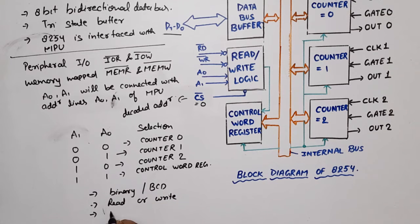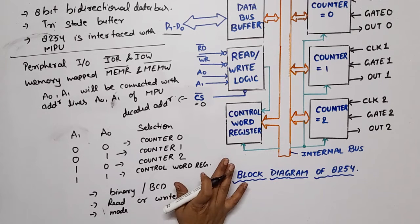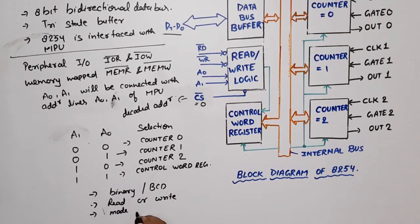and which mode is selected. Means that the counters will work in the 6 modes. That all will be decided by the control word register mode selection. So this is the function of control word. I think these 3 will be clear. Still there will be no doubt, please write down in comment section.